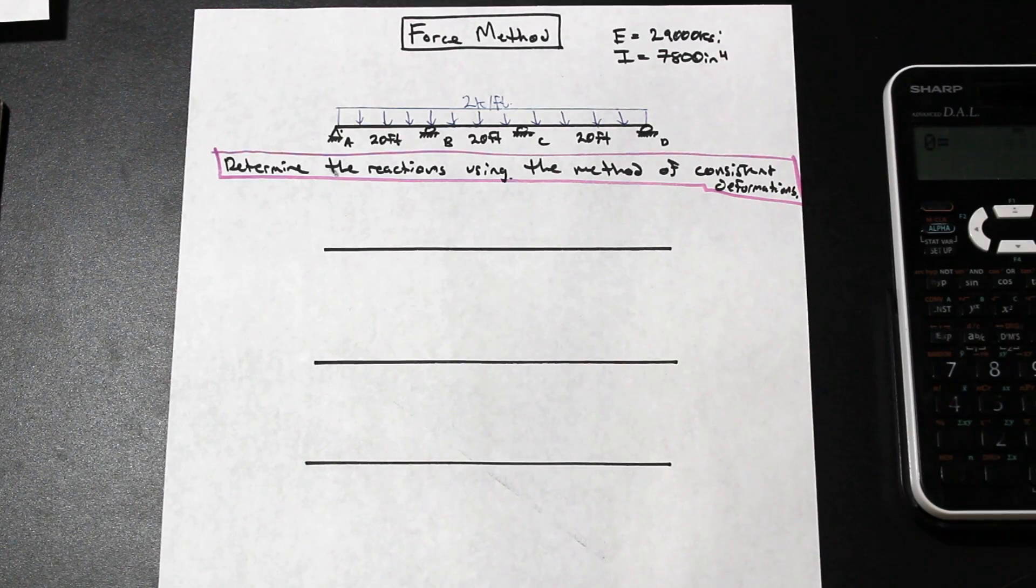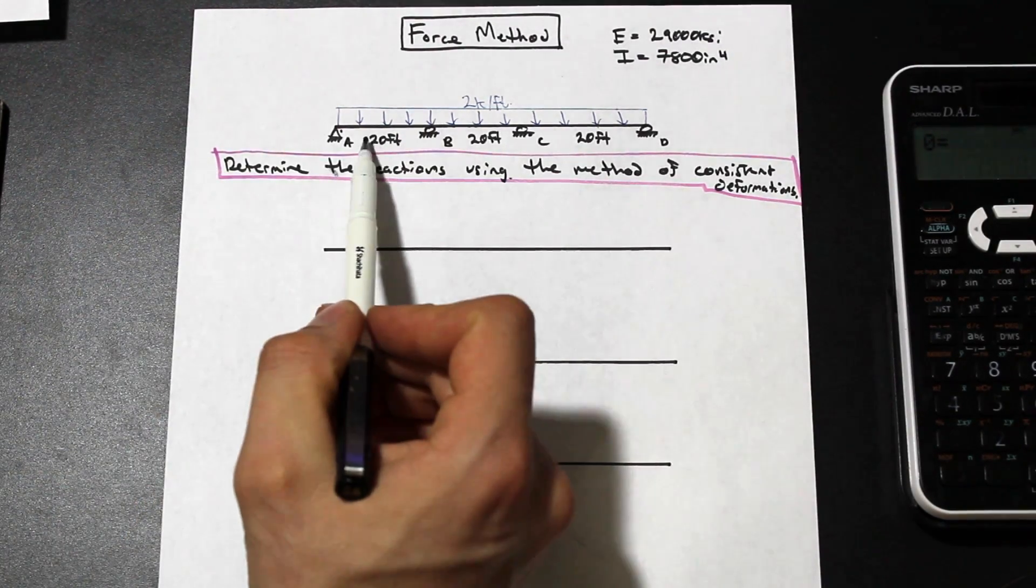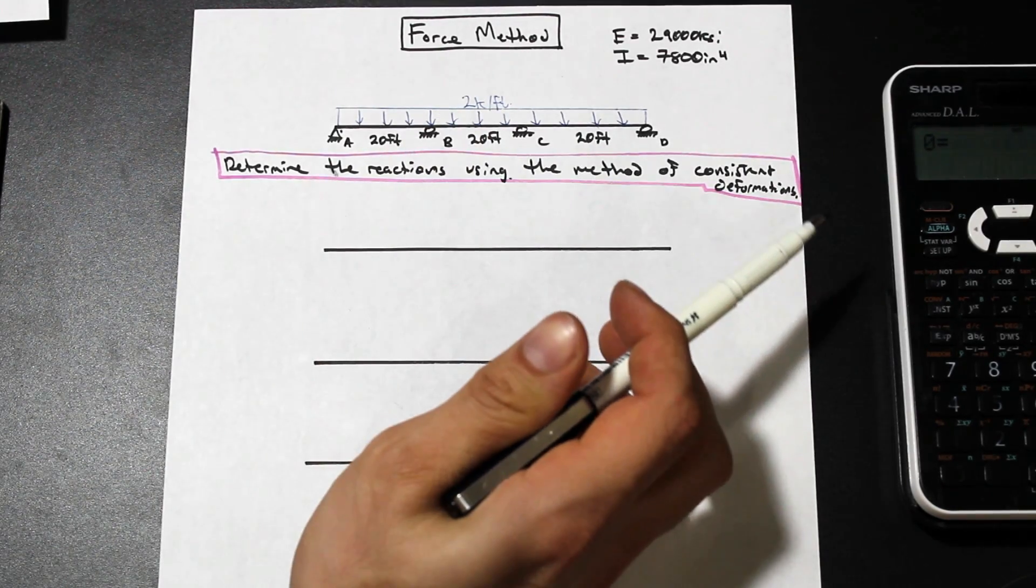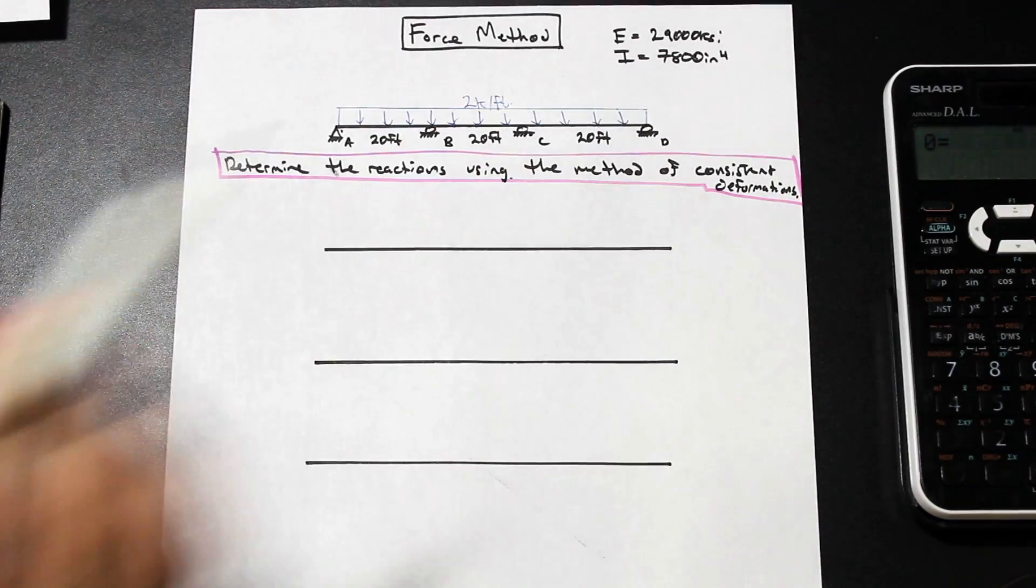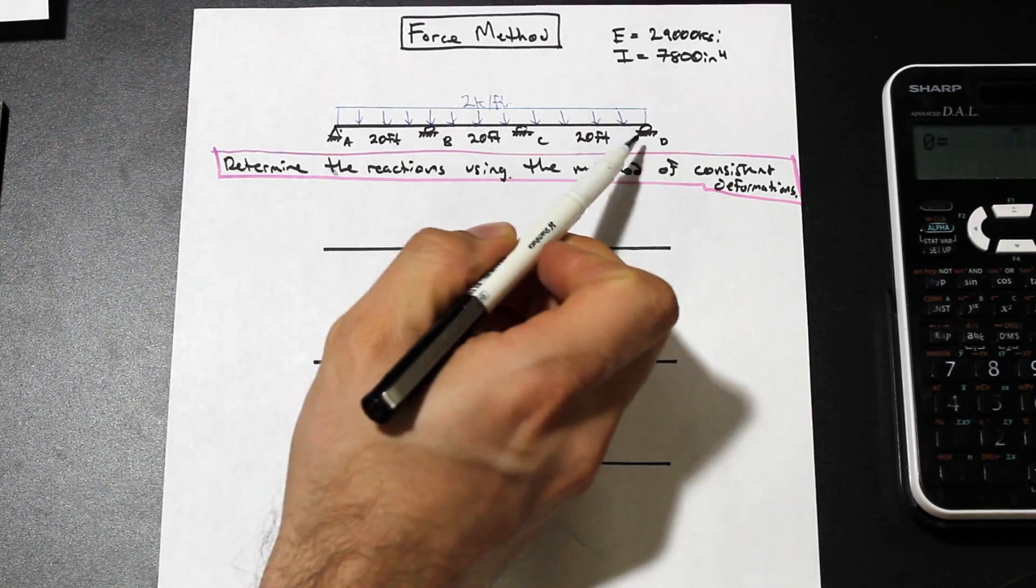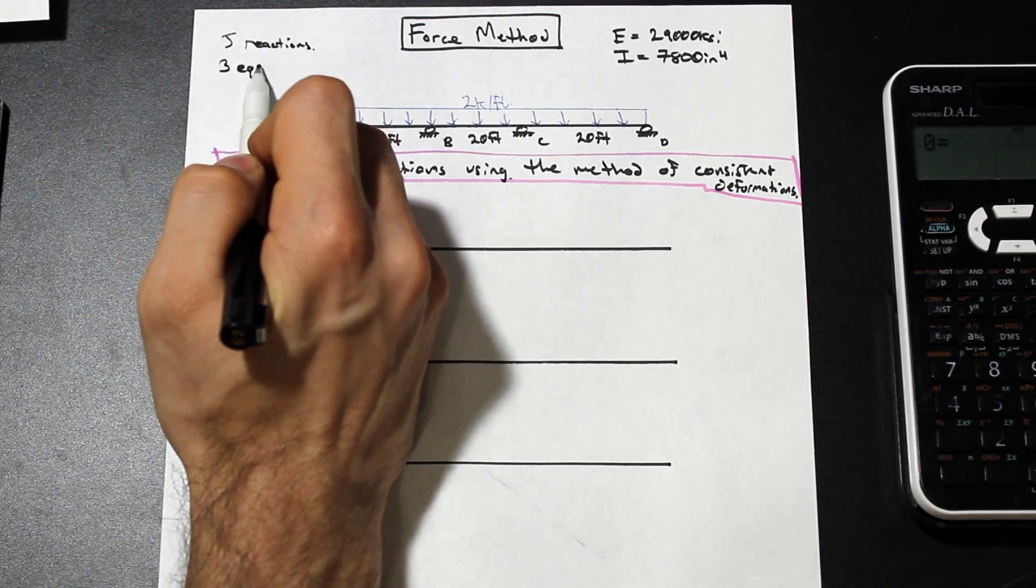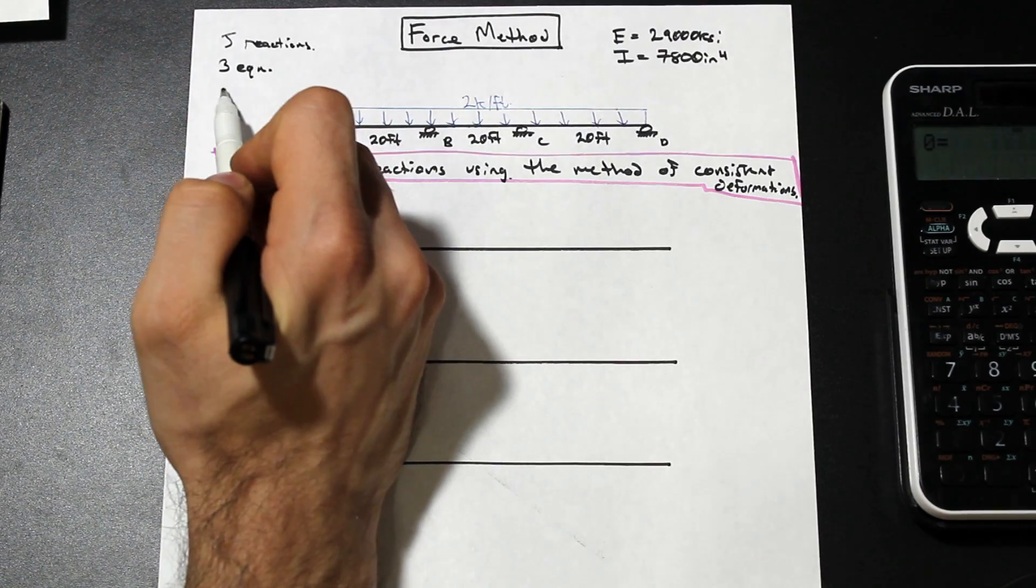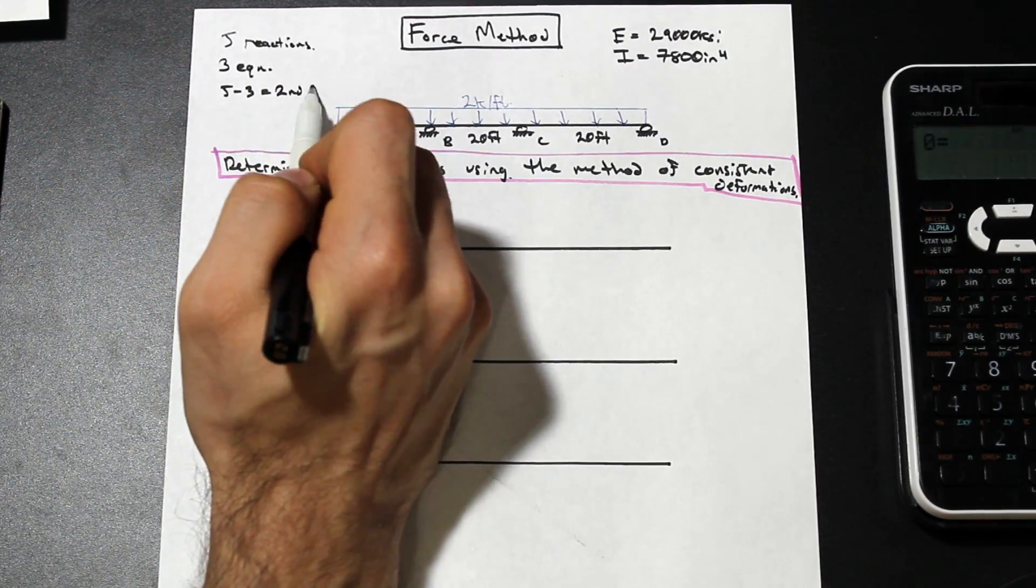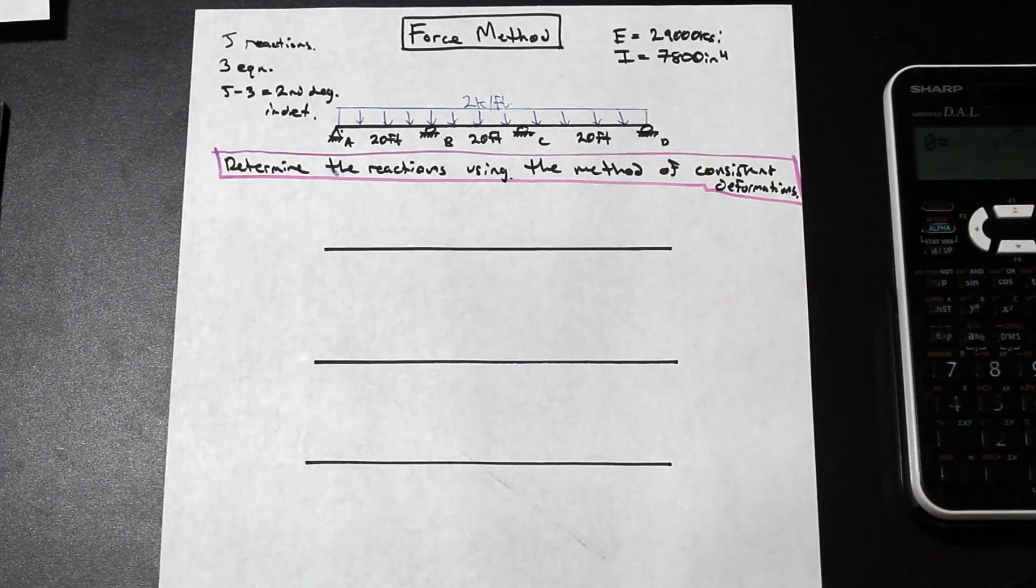So the question is determine the reactions using the method of consistent deformations. We're going to be given a beam here, a continuous beam. We have a 2 kip per foot load distributed across the whole thing. And as always, first step is to count the reactions. So we have a pin, so that's two, three, four, five reactions. And we have three equations of equilibrium, as always with a beam. So this is 5 minus 3, so it is second degree indeterminate.